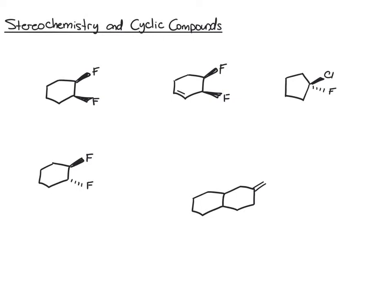Here we're going to take a look at the stereochemistry of some cyclic compounds, essentially meaning the chiral centers are on a carbon of the ring. For the most part it's not much different than what we've been doing — we're going to follow the same rules and the same logic that you've been using.